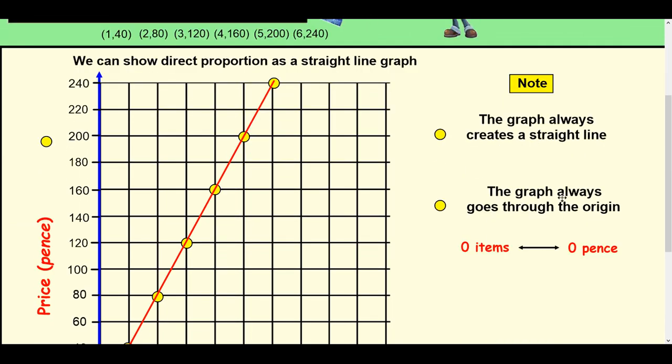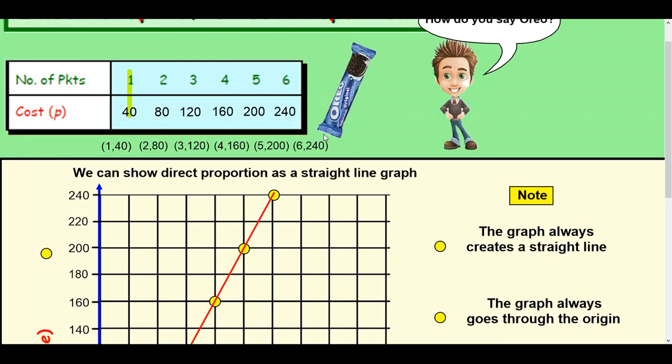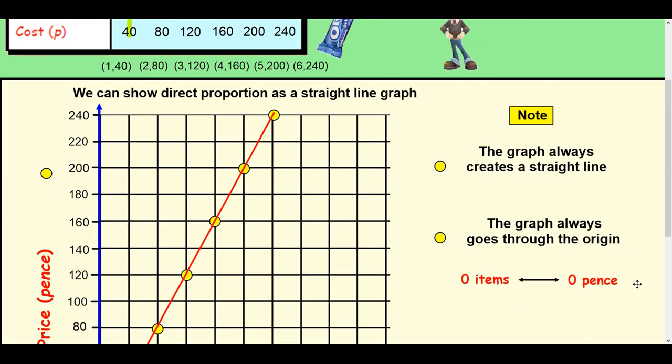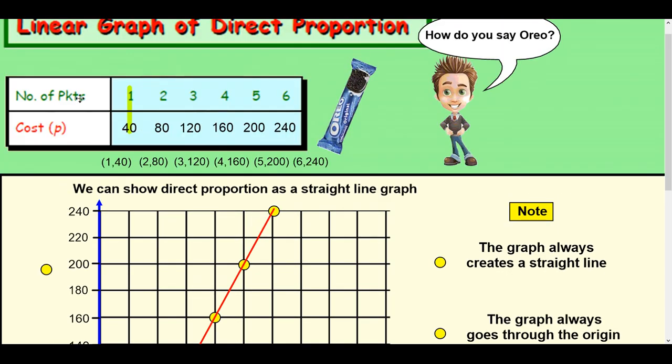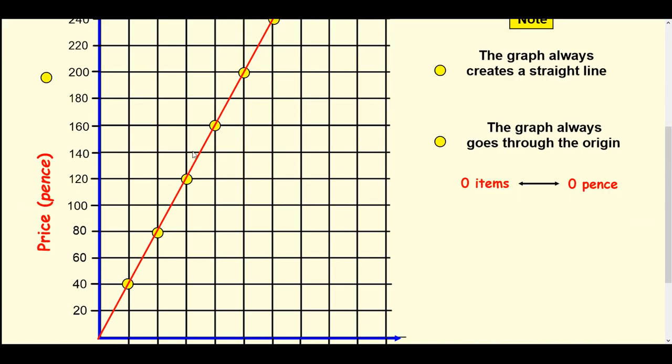The graph always goes through the origin as well, because when there's zero items, there's zero pence. So if there's no packets at all, it won't cost anything. That's why it always goes through the origin, through zero.